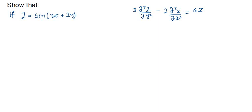Let's look at another question where we are given a function of Z and we have to show that 3 multiplied by the second partial derivative of Z with respect to Y minus 2 multiplied by the second partial derivative of Z with respect to X equals 6Z.